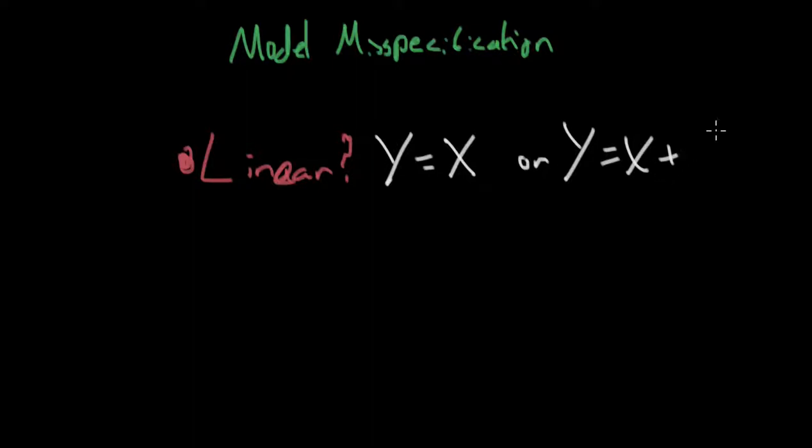So Y equals white blood cell count plus some polynomial factor, some squared factor of white blood cell count? Or is it you add maybe cubed factors in? We're not necessarily sure.